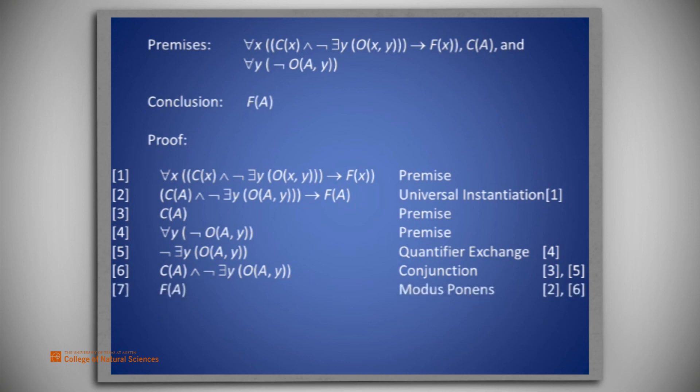Finally, from lines two and six, with modus ponens, we get our conclusion, F(A), which is written on line seven. That concludes the proof.